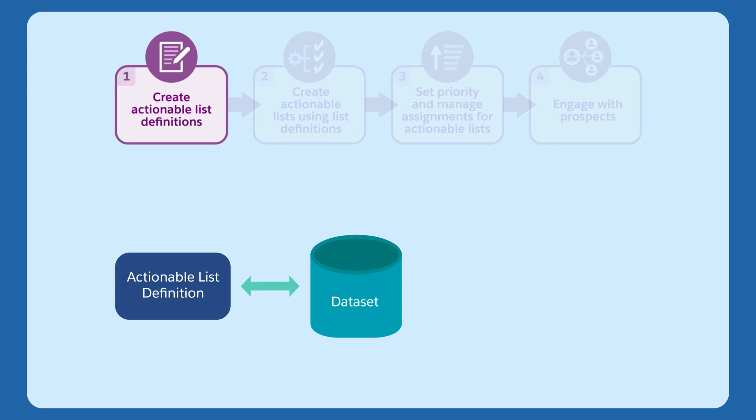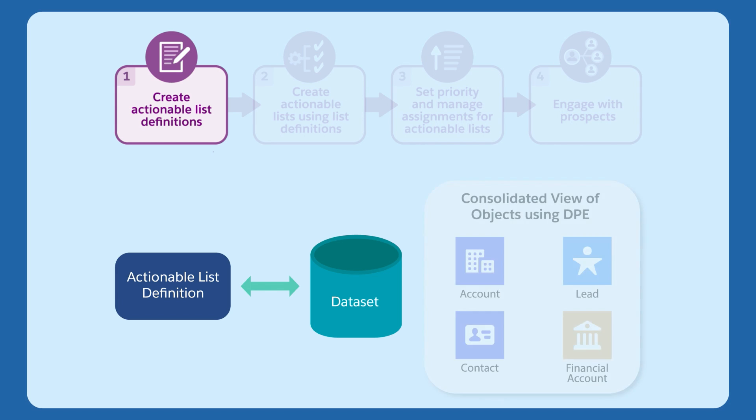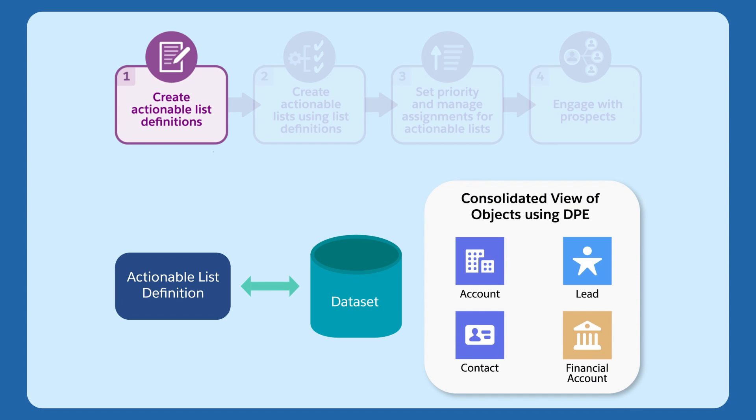For example, if a business requirement is to sell a wealth plan designed for individuals or households whose net worth is greater than 1 million US dollars, then your admin can create a dataset containing such records by joining objects such as account, contact, lead, and financial account.